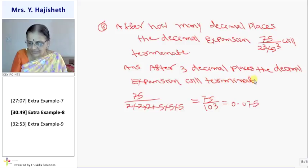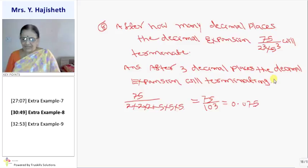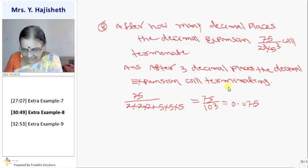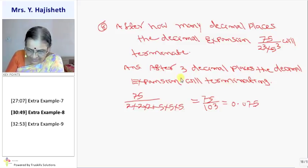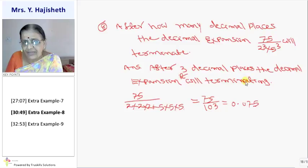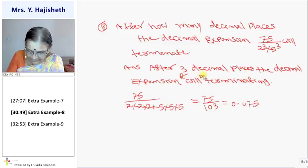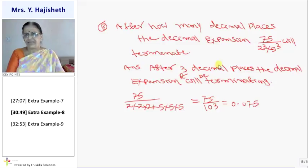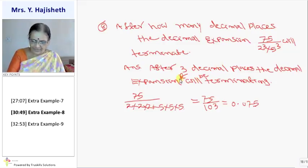Because without expansion, how can I say after 3 decimal places, of decimal expansion, it will terminate. It will be terminating.